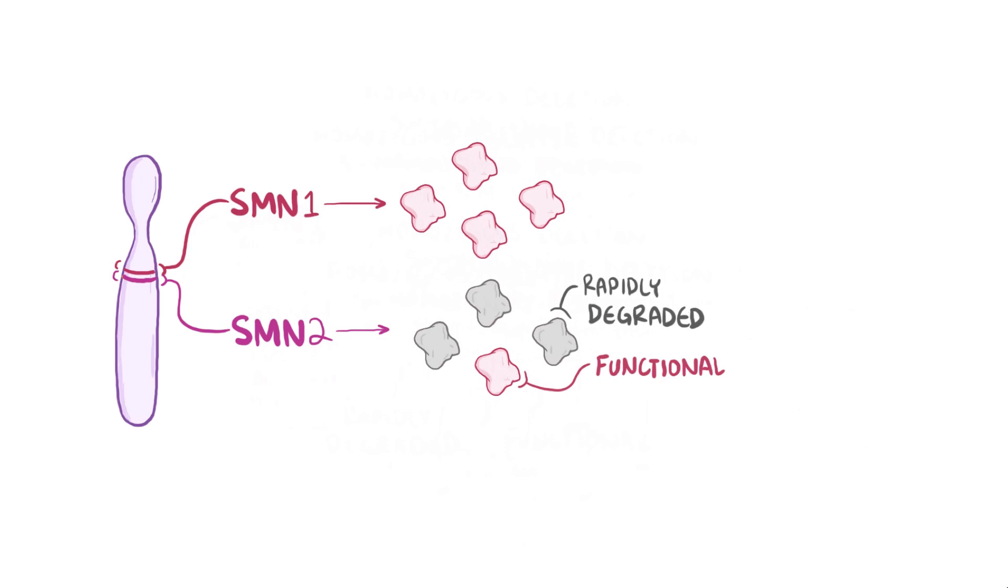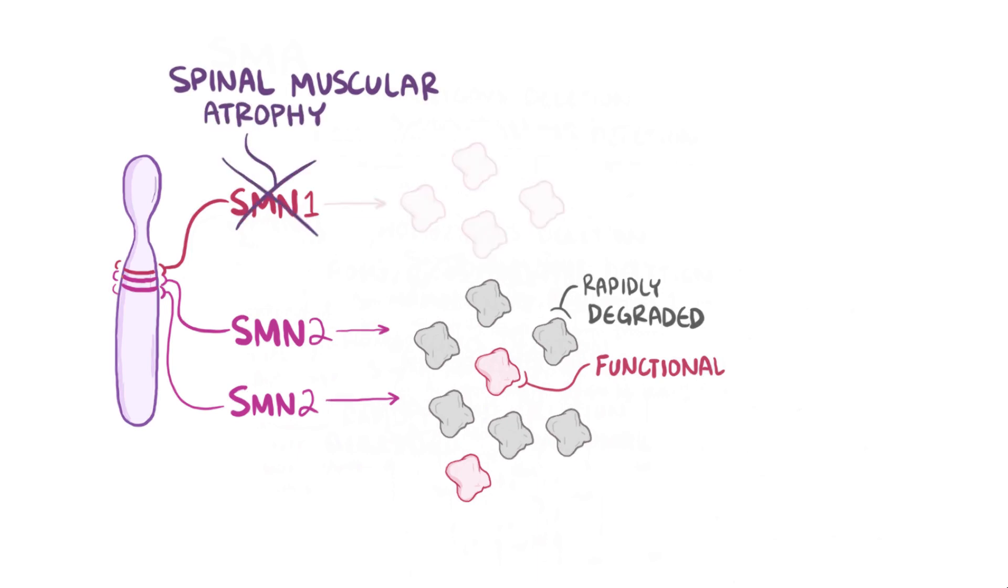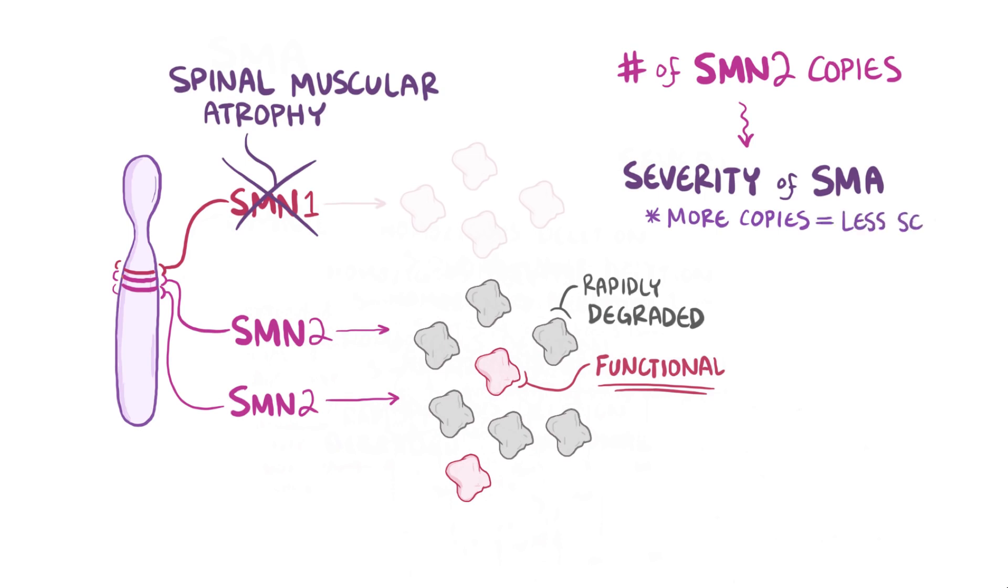Furthermore, often people might have multiple duplications of the SMN genes, which might result in several copies of SMN2, and this SMN2 copy number actually varies quite a bit in a population. Now, all this is important because patients with SMA have no functioning copies of SMN1, and since SMN2 still makes a small amount of functional SMN protein, the number of copies of SMN2 determines the severity of spinal muscular atrophy. More copies means more SMN protein, and a milder SMA phenotype.